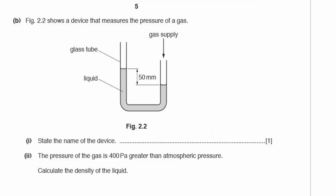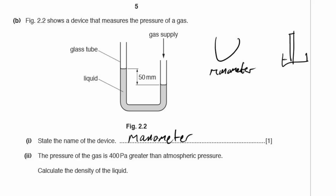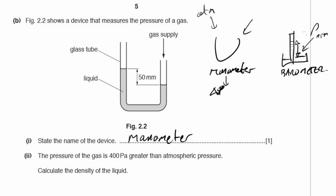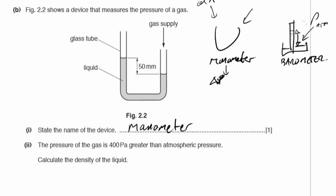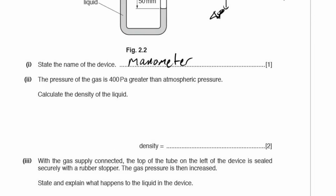Part B: Figure 2.2 shows a device that measures the pressure of a gas — state its name. This device is called a manometer. A manometer measures the pressure difference between the gas and the atmosphere, whereas a barometer measures atmospheric pressure itself. The pressure difference is given by density × gravity × height (ρgh).